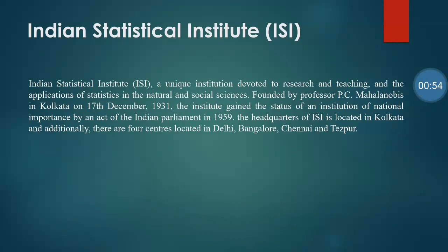The Indian Statistical Institute, or ISI, is a unique institution devoted to research and teaching in the applications of statistics in natural and social sciences. It was founded by P.C. Mahalanobis in Kolkata on 17th December 1931, and was established by an Act of Indian Parliament in 1959. Its headquarters is in Kolkata, with additional centers located in Delhi, Bangalore, Chennai, and Tezpur.